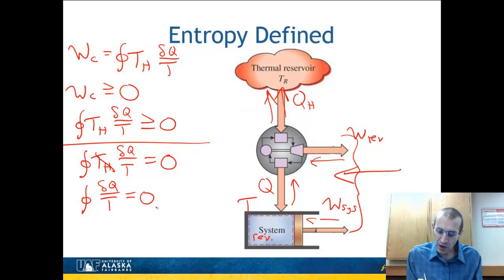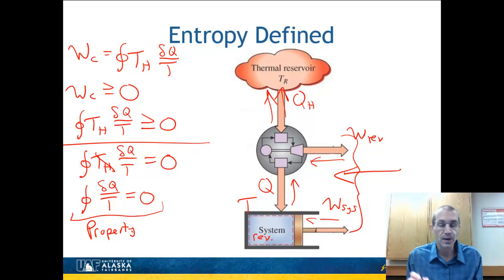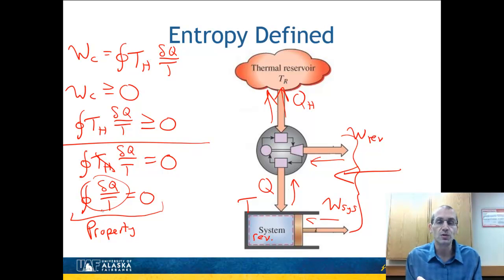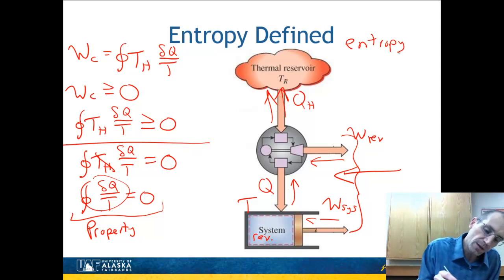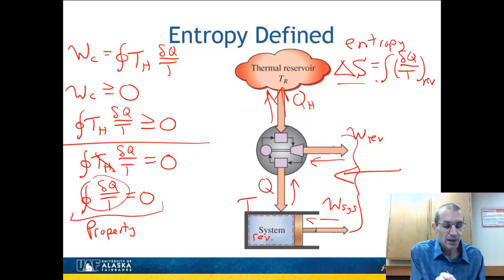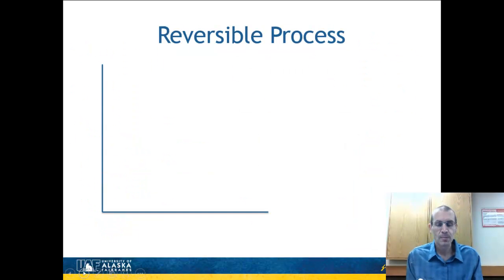What does that get us? If the cyclic integral of a quantity is zero, that quantity is a property — because if you move around in state space and come back to where all other properties (pressure, temperature, internal energy) are the same, this value also hasn't changed, and it can be used to define the state of the system. That's the definition of entropy. Entropy — symbol S — is defined such that the change in entropy dS equals δQ/T for a reversible process. To find the change in entropy, you integrate the heat transfer normalized by temperature along a reversible path.